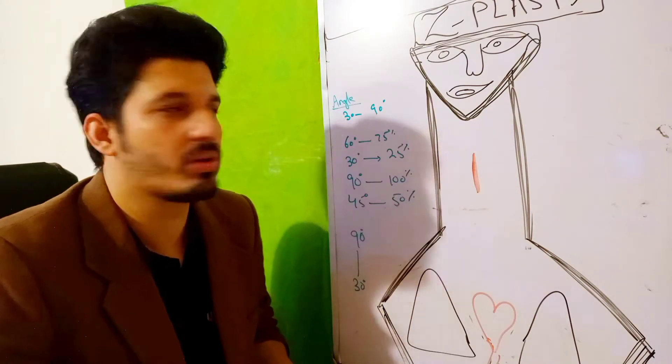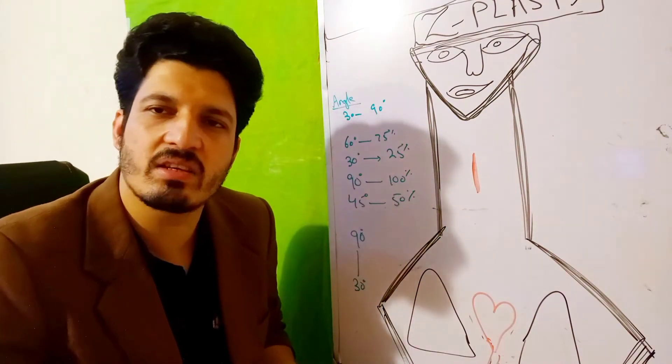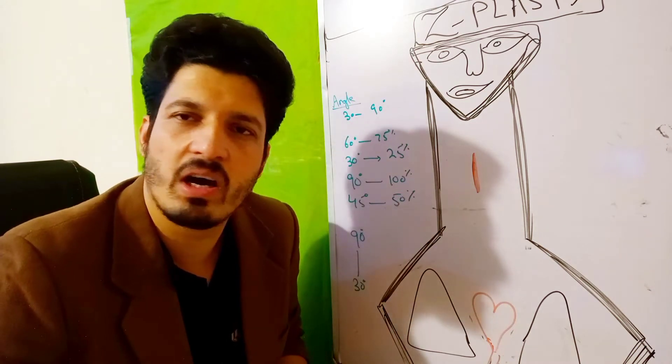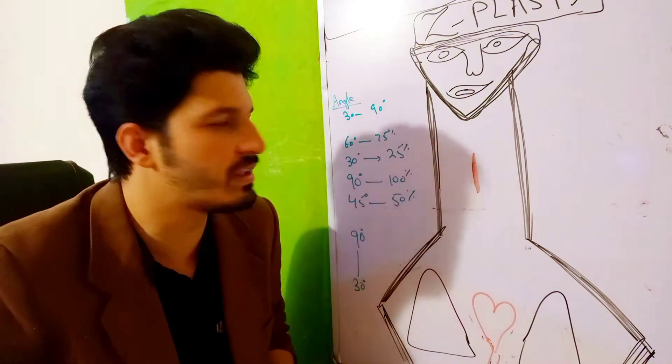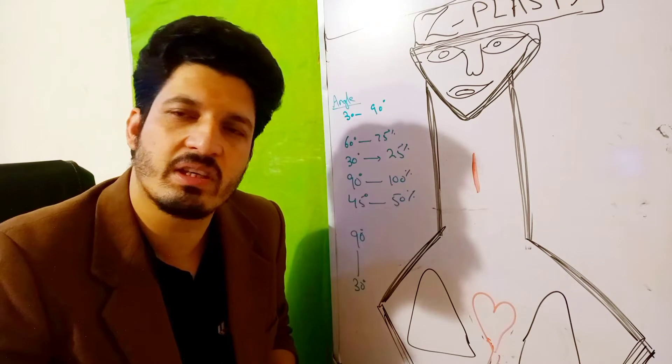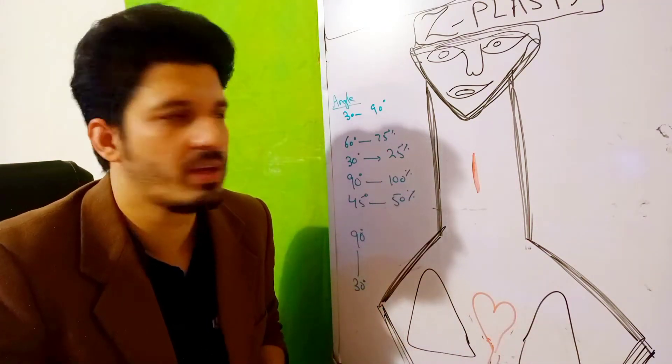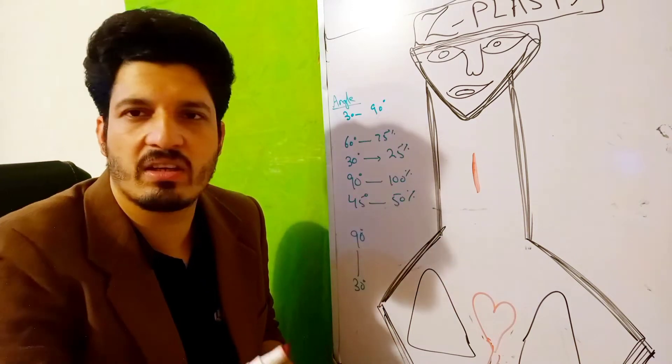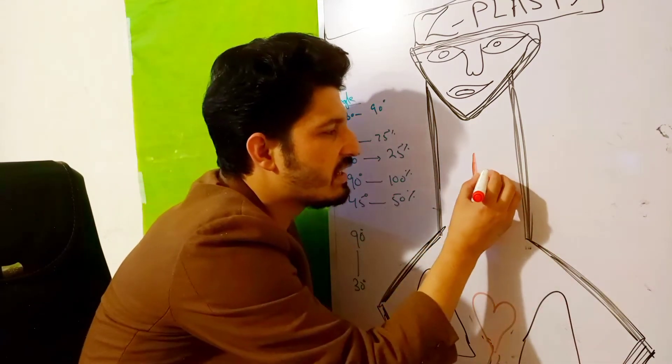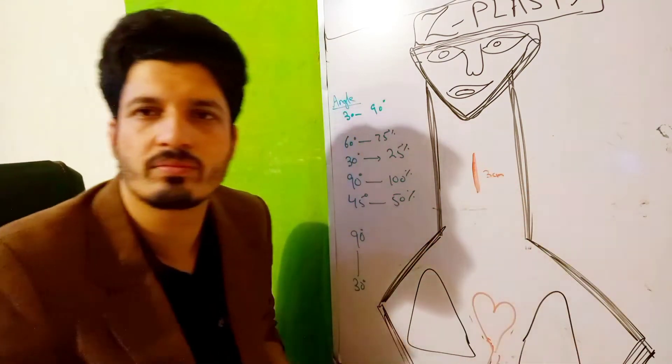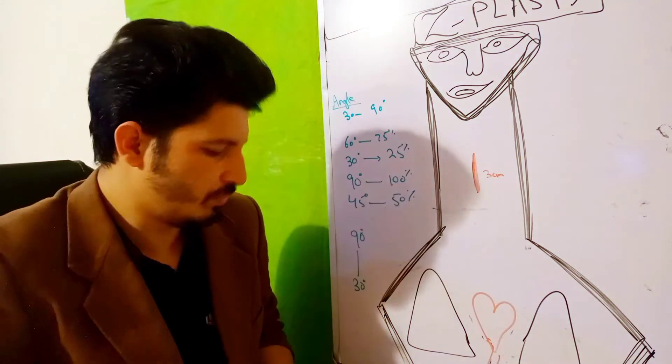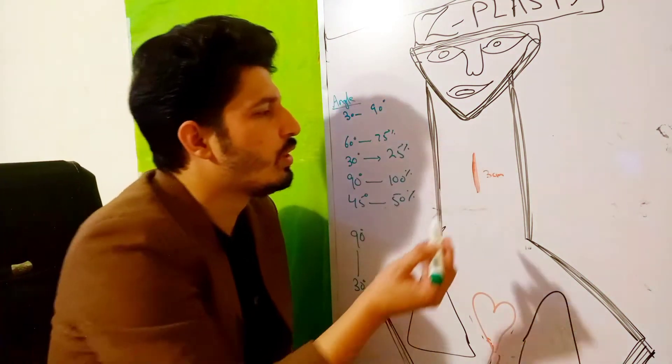One thing more: the size of the limbs—there will be three limbs—all the limbs will be the same, and the angle between the limbs should also be the same. Suppose this is a 3-centimeter linear scar.